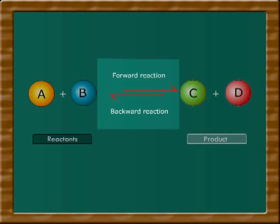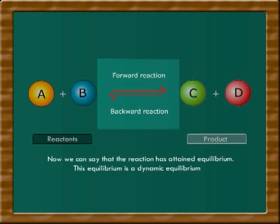Now, the forward reaction slows down and the backward reaction occurs with high velocity. After some time, the forward and backward reactions occur with the same velocity. Now, we can say that the reaction has attained equilibrium. This equilibrium is a dynamic equilibrium.